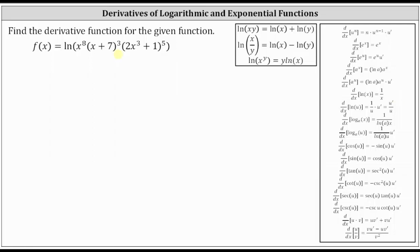We want to find the derivative for the given function. Notice how we do have a composite function where the outer function is a natural log function and the inner function is the product of three inner functions. In this case, to find f prime of x, it'll be much easier to first expand the logarithm on the right using the log properties. We will begin with the product property of logarithms, which is natural log of the quantity x times y equals natural log x plus natural log y.